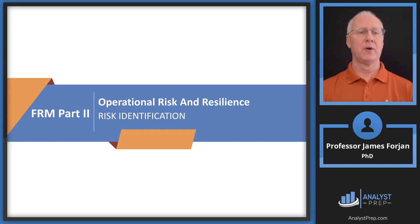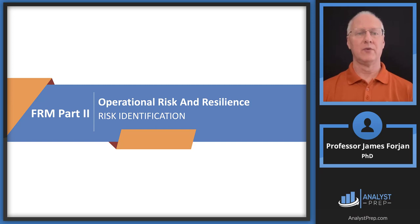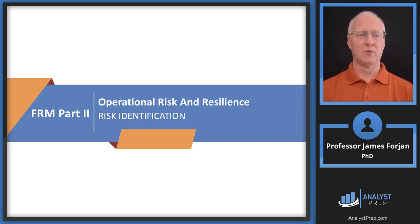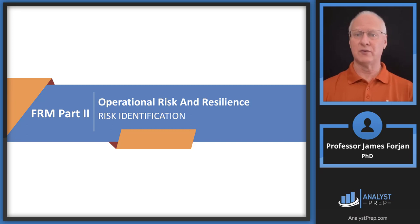Hey, it's Jim, and this is FRM Part 2, the topic on operational risk and resilience and the reading on risk identification. I want to begin by paraphrasing the first couple of sentences inside of this reading. I sure hope that you guys at least glance at the reading, if not work through its entirety. Some readings are better than others, more interesting than others. These series of readings in this topic, I think, are really well written.